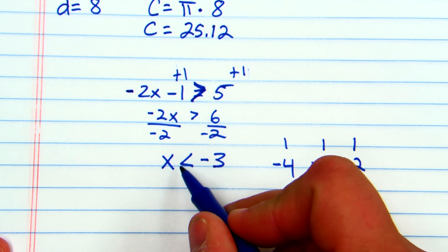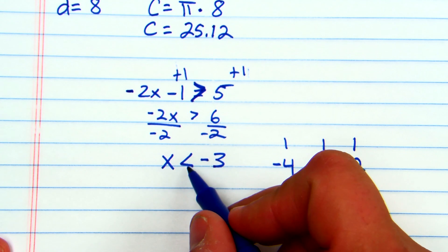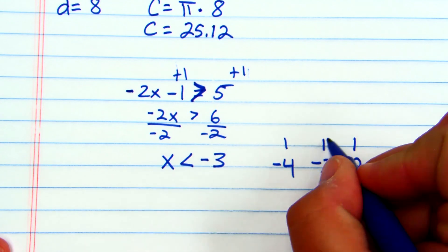x is less than negative 3. Since my variable is first, I can just draw my line, the direction, my arrow, the direction that the inequality is pointing. So this was pointing left. So I'll circle negative 3.